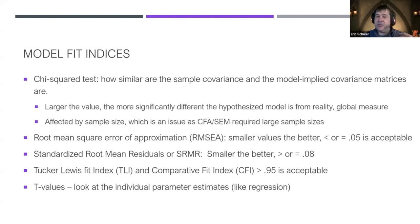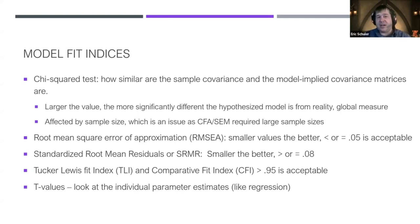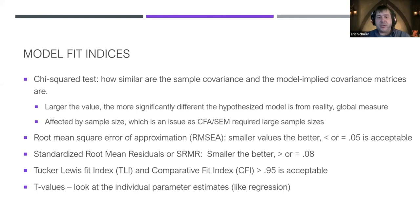Chi-square is really impacted by sample size, which is a huge issue because latent variable modeling requires at least a couple hundred responses. With 500 people you might get a significant chi-square just due to sample size. We also look at RMSEA — smaller is better, ideally below 0.05. SRMR should be 0.08 or lower. CFI and TLI should be 0.95 or better.